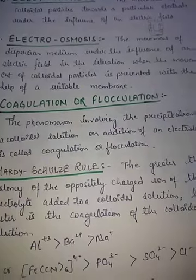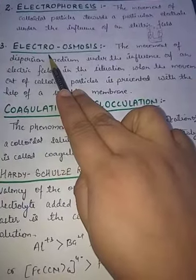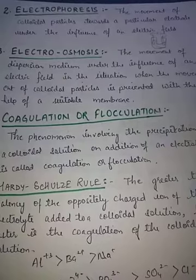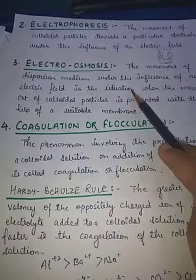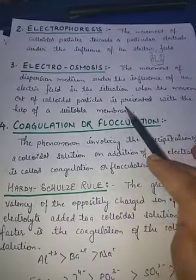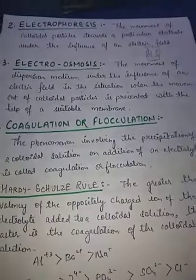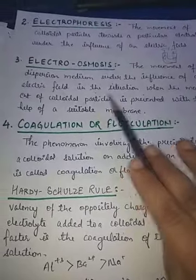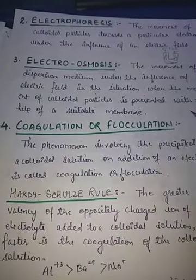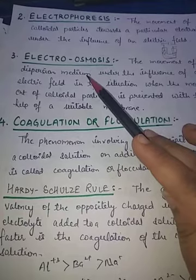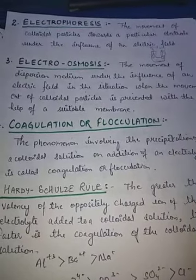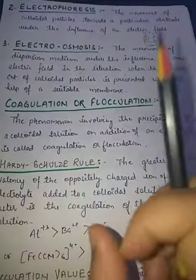The next property is electro-osmosis. Here, osmosis takes place when an electric field is applied. Only the dispersion medium moves — the colloidal particles do not move. With the help of a suitable membrane, movement of colloidal particles is restricted, and only the dispersion medium moves under the influence of the electric field. This is called electro-osmosis.